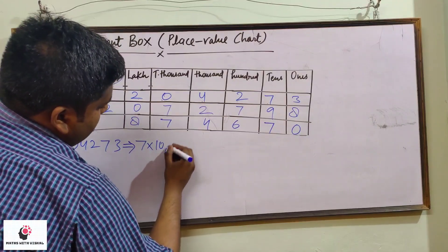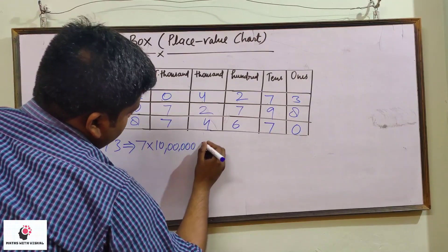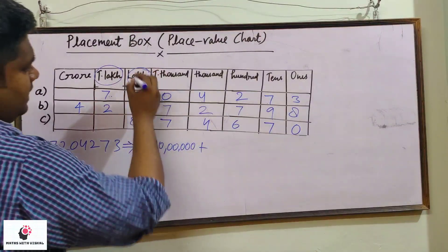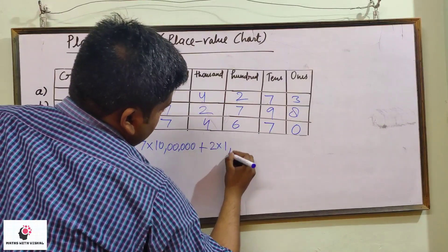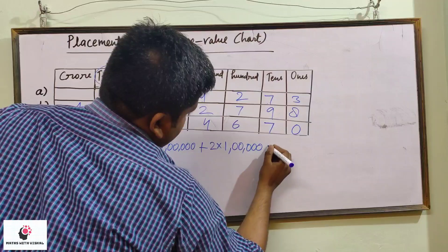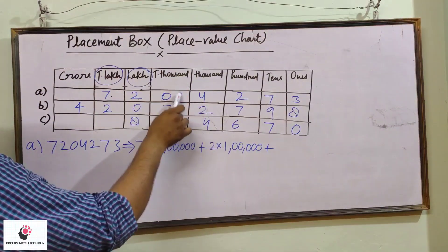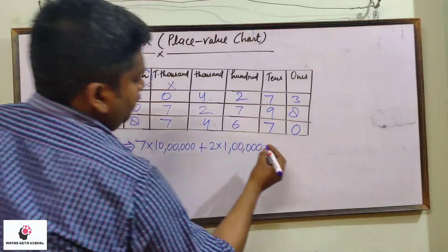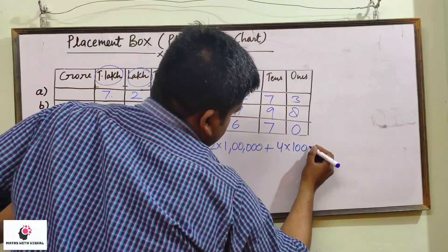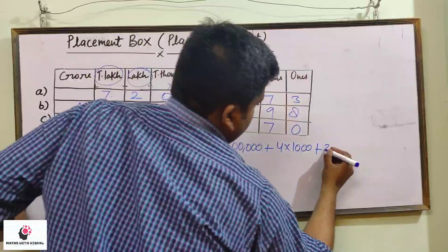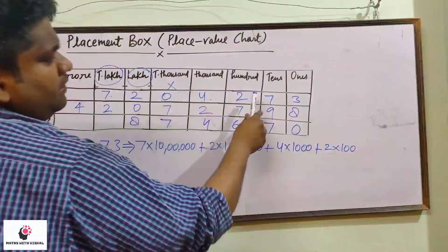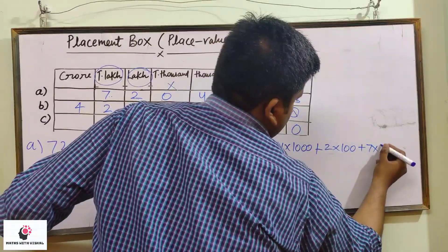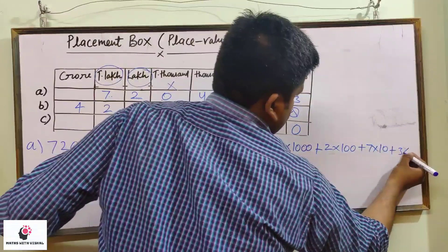Ten lakh. Then two — two will be multiplied by one lakh. Then, because there is zero at thousands and zero at ten thousands, zero we shall not consider. Then four into one thousand, plus two into one hundred, then seven into ten, plus three into one. Is it easy?